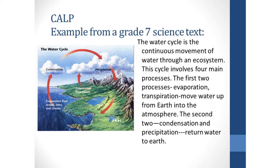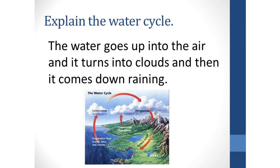Here's another example of CALP from a grade 7 science textbook. You can see all of the academic language and the way that words are put together syntactically: 'The water cycle is the continuous movement of water through an ecosystem. This cycle involves four main processes. The first two processes, evaporation and transpiration, move water up from the earth into the atmosphere. The second two, condensation and precipitation, return water to the earth.' Now, if we asked a student to explain the water cycle, they might say, 'The water goes up into the air and it turns into clouds and then it comes down raining.' We might think they have a pretty good understanding, but notice they have not used any academic vocabulary. It is the development and use of academic vocabulary that will contribute to a student's long-term success at school.